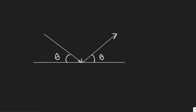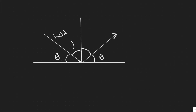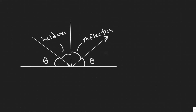If our light ray hits a surface and bounces off, and we draw a line that is normal or perpendicular to the surface it hits, the angle on the incoming side and the angle on the outgoing side are the same. This incoming angle is called the angle of incidence, and the outgoing angle is called the angle of reflection — or refraction if it enters a new material, but here we're just talking about reflection.